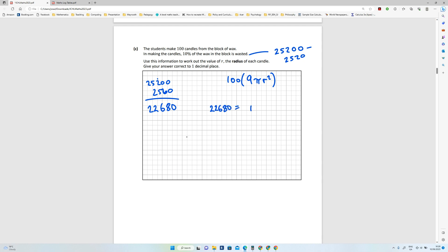22680 equals 100 times 9πr². So we need to get r by itself. So the first thing we can do, I'll just flip the order of these around now. So 100 by 9 is 900, so 900πr² equals the same number.